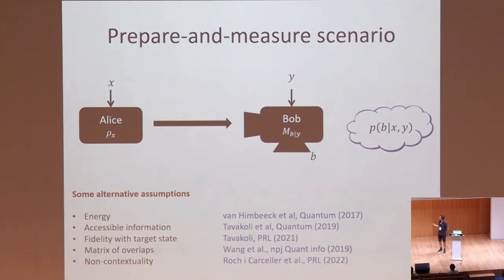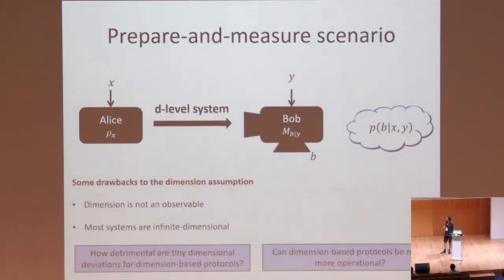Other ways are to say that you have a sender trying to create a certain state, but this state cannot be perfectly created because you don't have flawless control of your lab. So you can limit the fidelity with your ability to create that state. Other assumptions are limits on the overlaps of the states you can create, and also operating from non-contextuality.